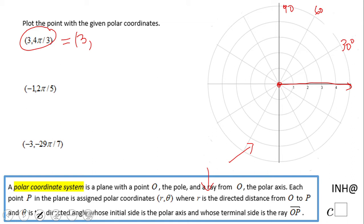4π over 3 is 240 degrees, right? If you like the radians, that's fine. So how am I going to plot that point? I'm going to start from here and I'm going to rotate 240 degrees. So this is 30, 60, 90, 120, 150, 180, obviously 210, 240.